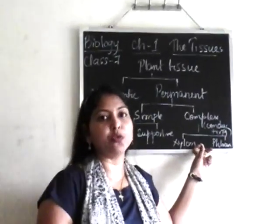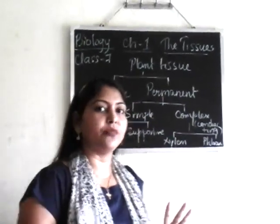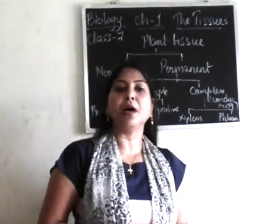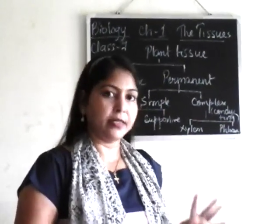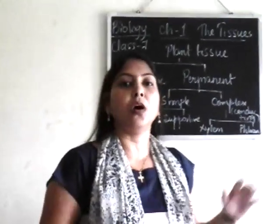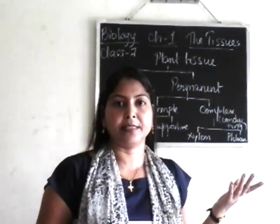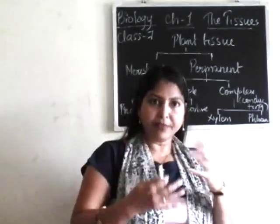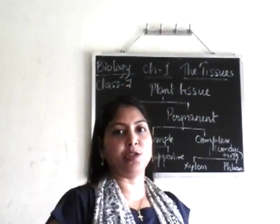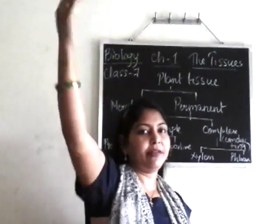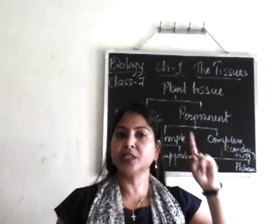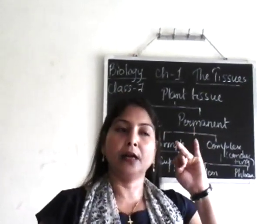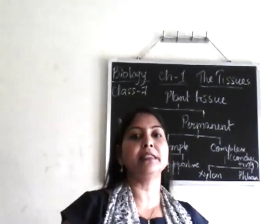Xylem tissue basically consists of four parts. The four parts are: tracheids, vessels, xylem parenchyma, and xylem fibers.